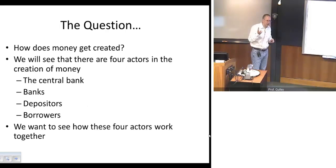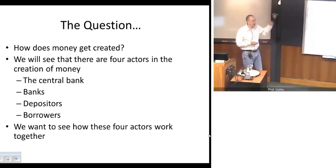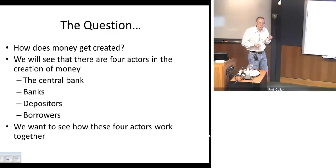And so what we want to do here is think, how does money get created in a financial system? And what we want to see here is that there are four actors in this game or in this play. We have the central bank, so for the United States, that's the Fed. We have banks, depositors, and we have borrowers. And we want to see how all these four actors work together. In this first part here, we will focus on banks, depositors, and borrowers.